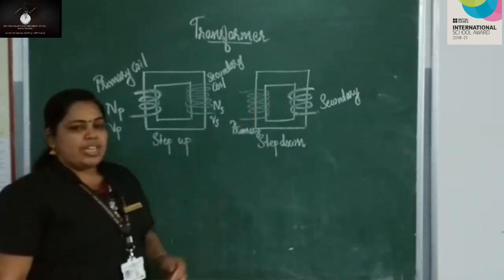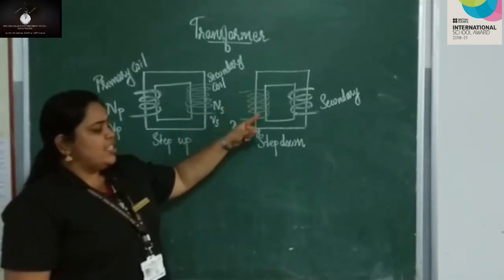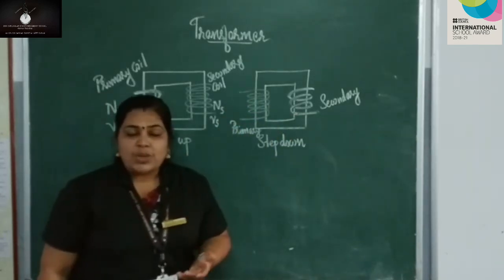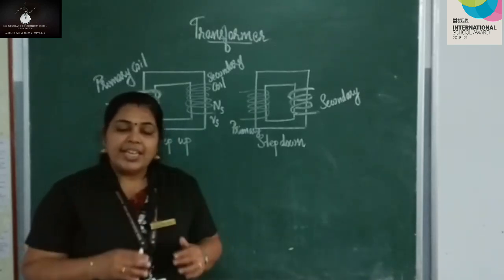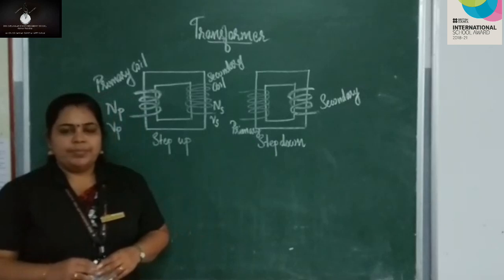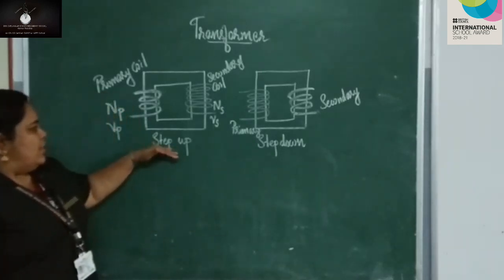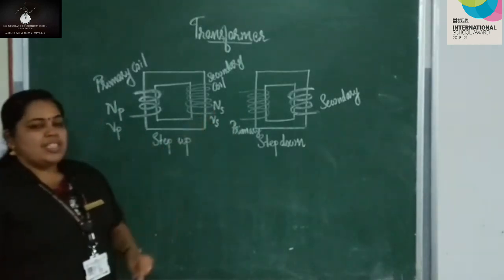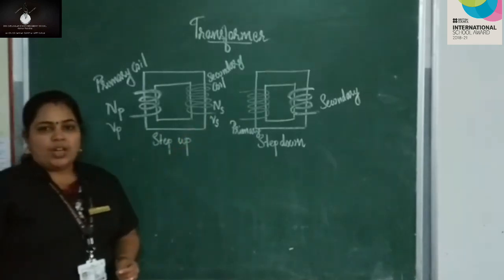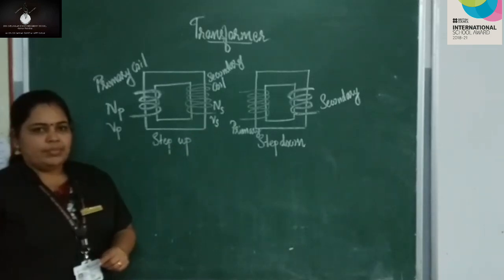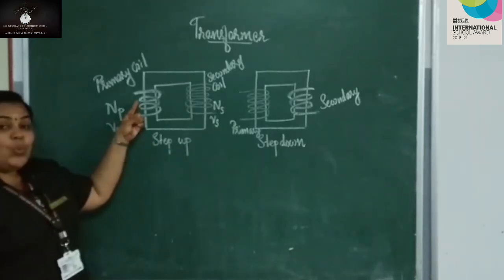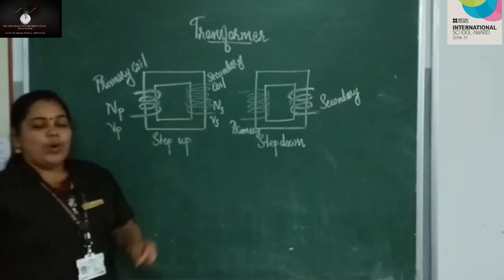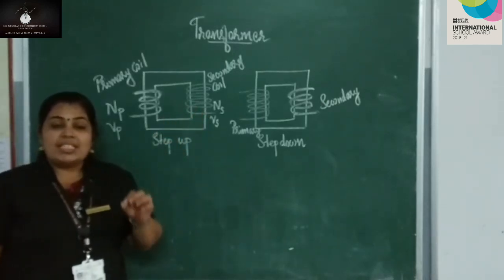When you look at the step down transformer, the number of turns in the primary is more, whereas the number of turns in the secondary is less. It is used to decrease the AC voltage. Thick wires are used in the primary whereas thin wires are used in the secondary of a step up transformer.